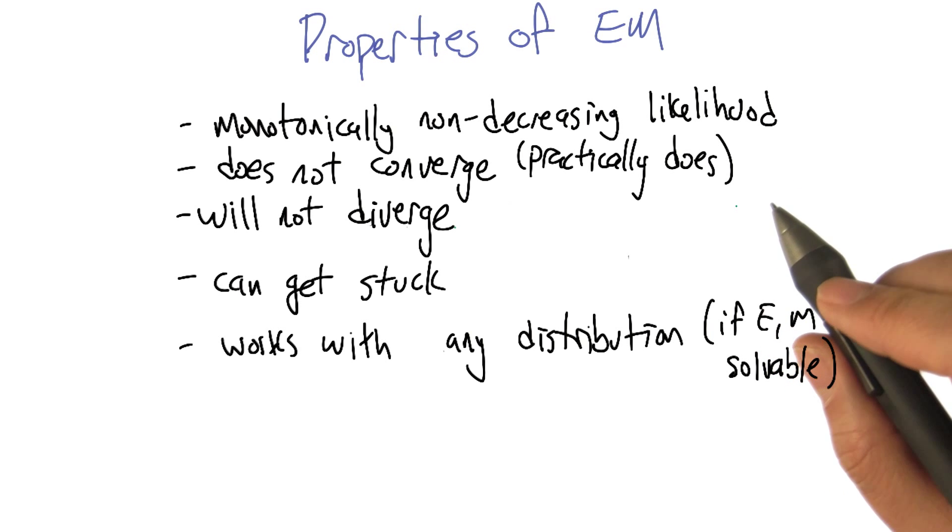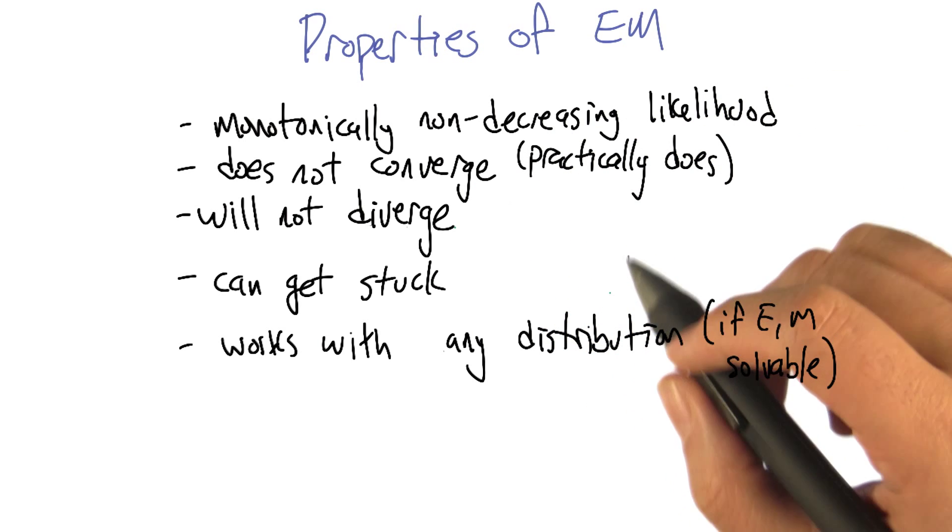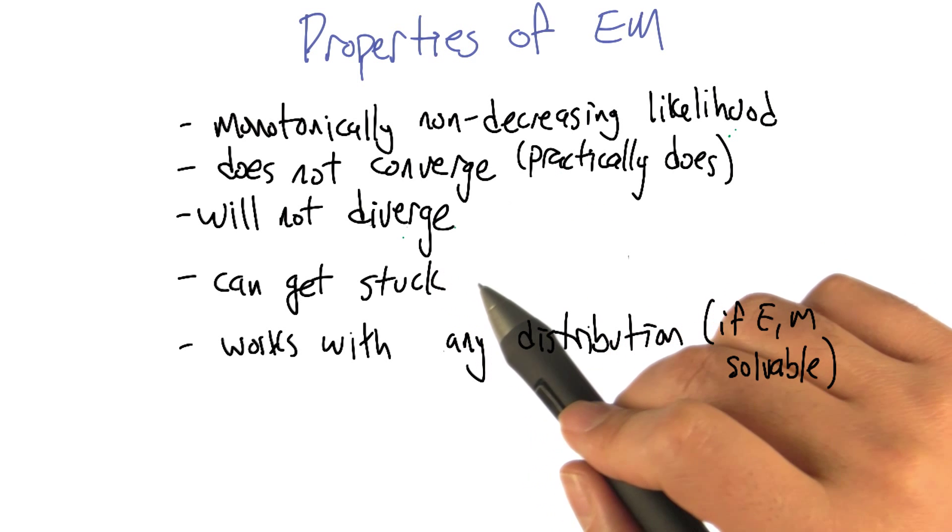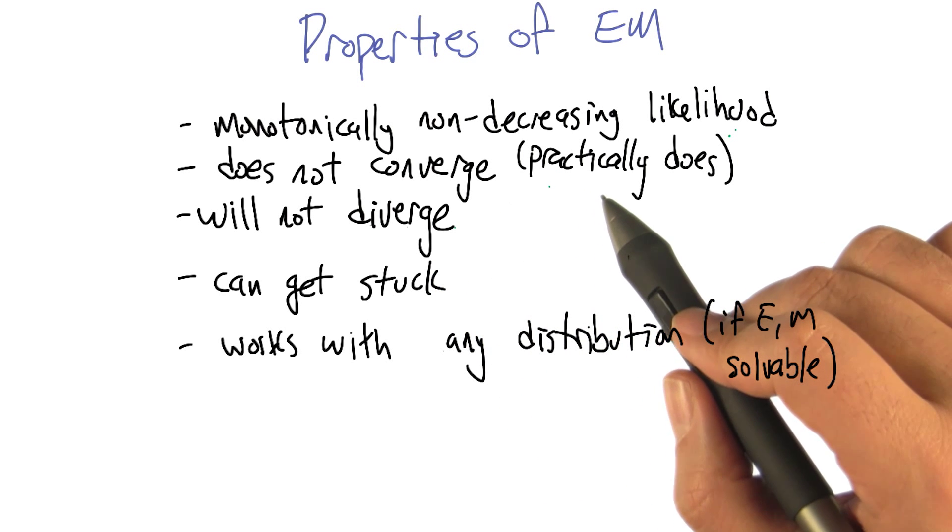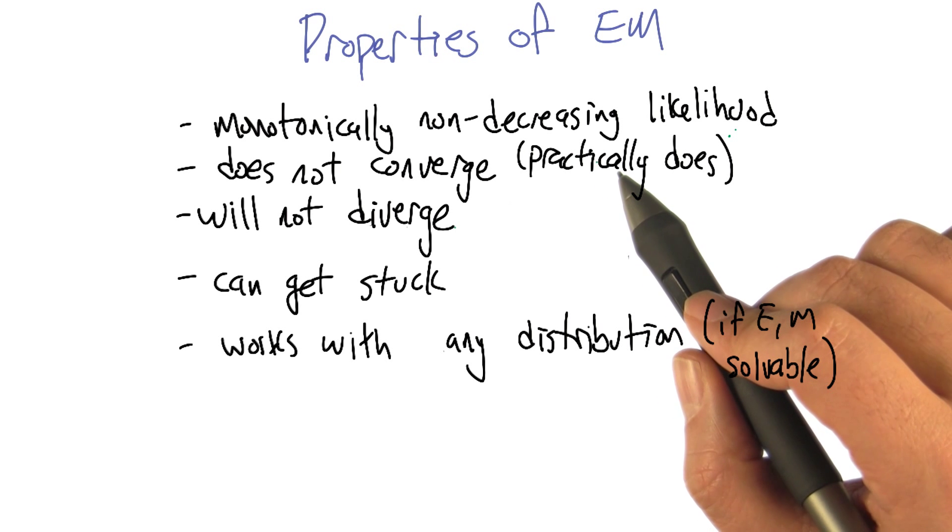One of the things that's good about it is that each time the iteration of EM runs, the likelihood of the data is monotonically non-decreasing. So it's not getting worse. Generally it's finding higher and higher likelihoods and moving in a good direction that way.